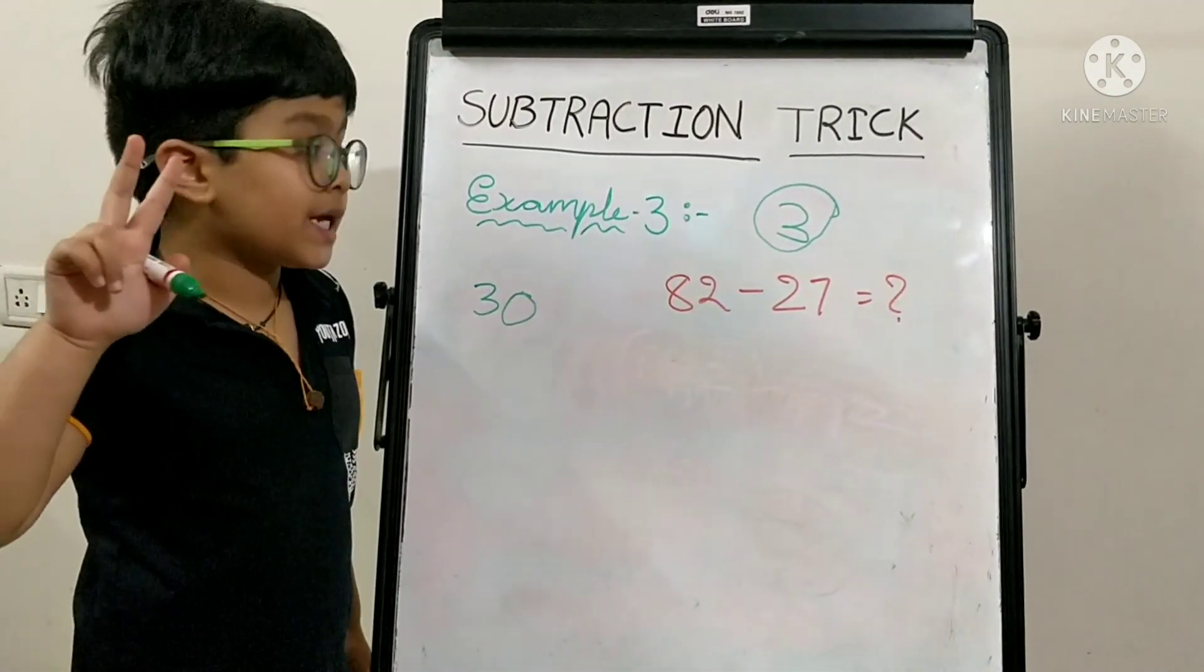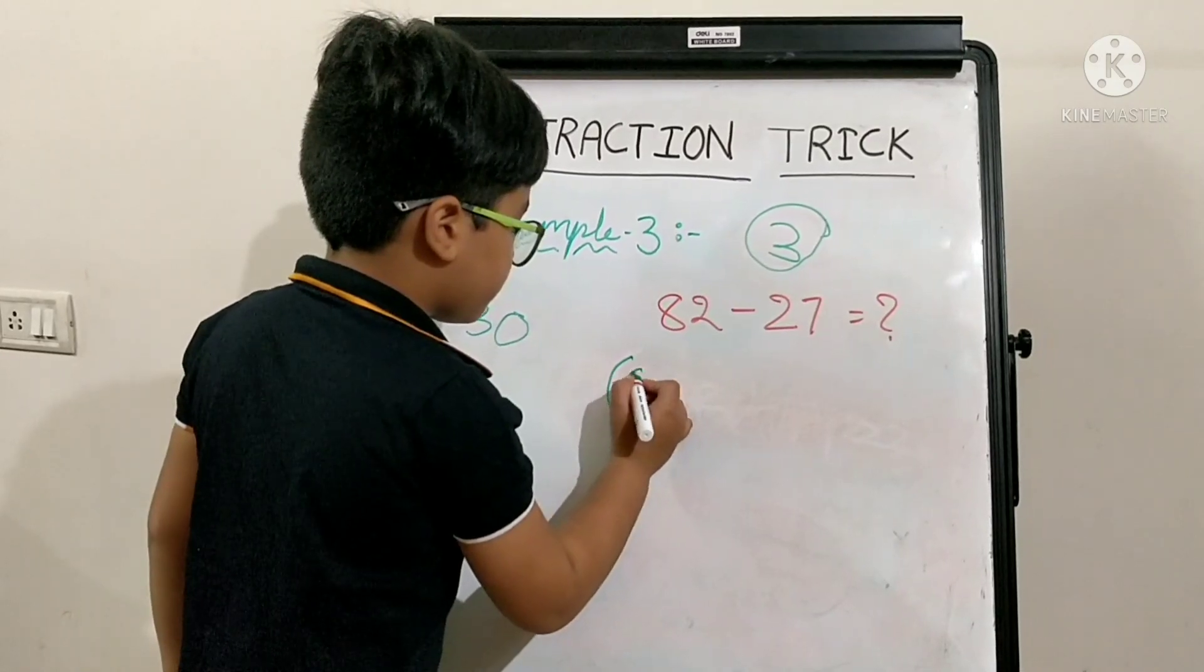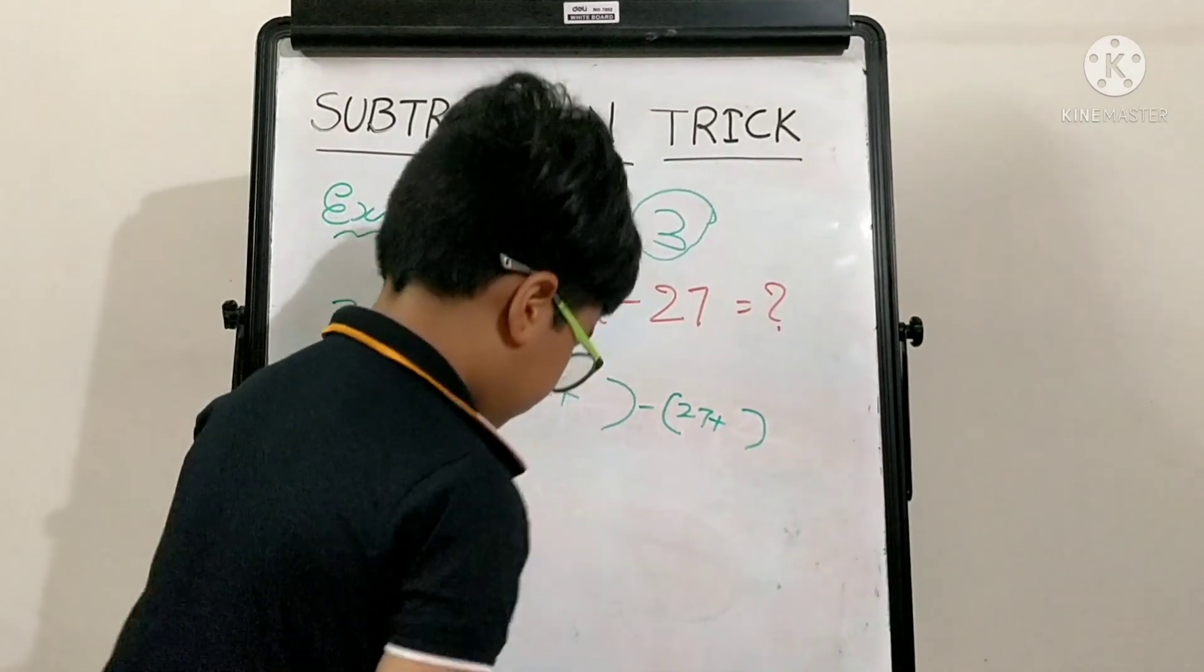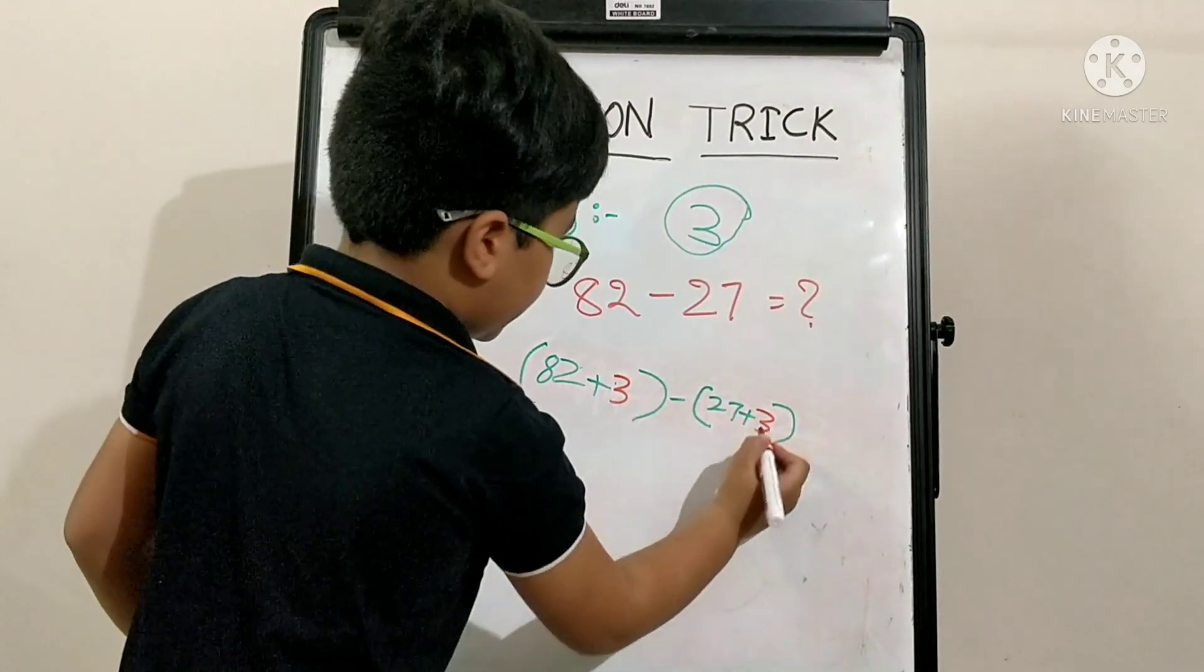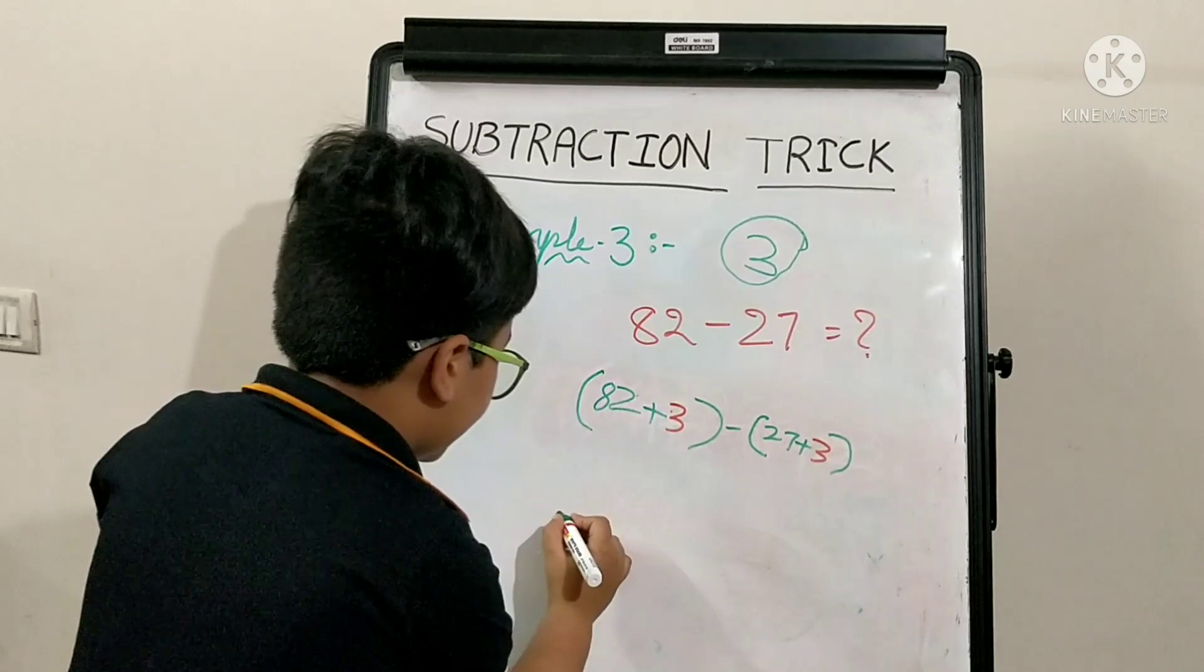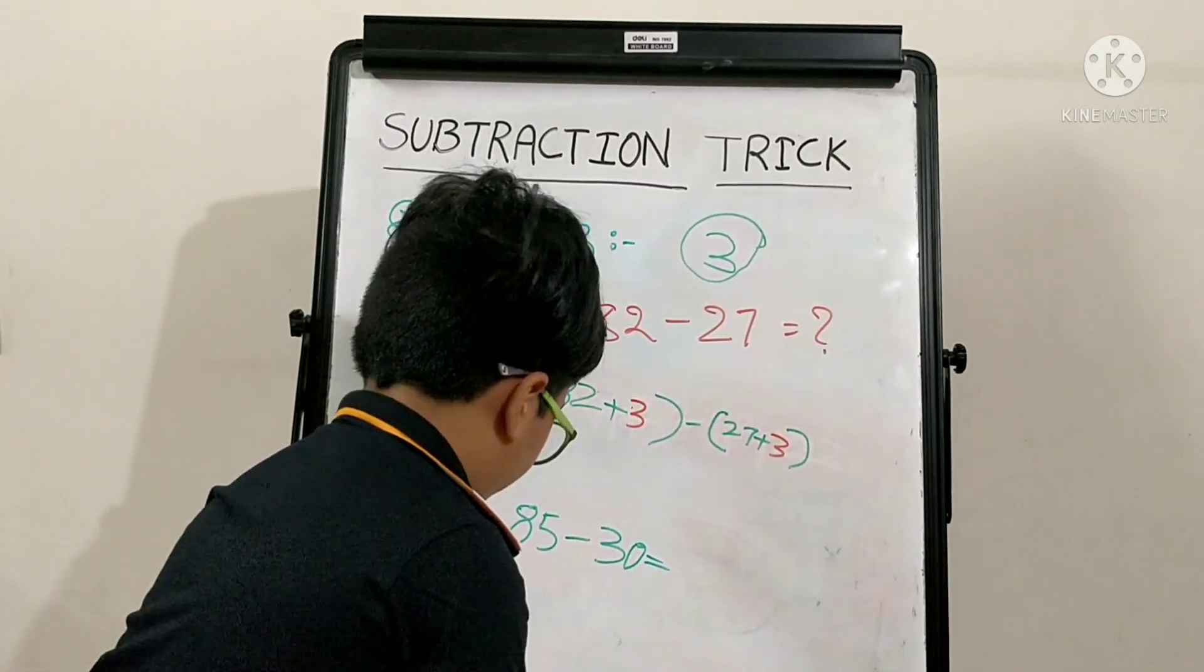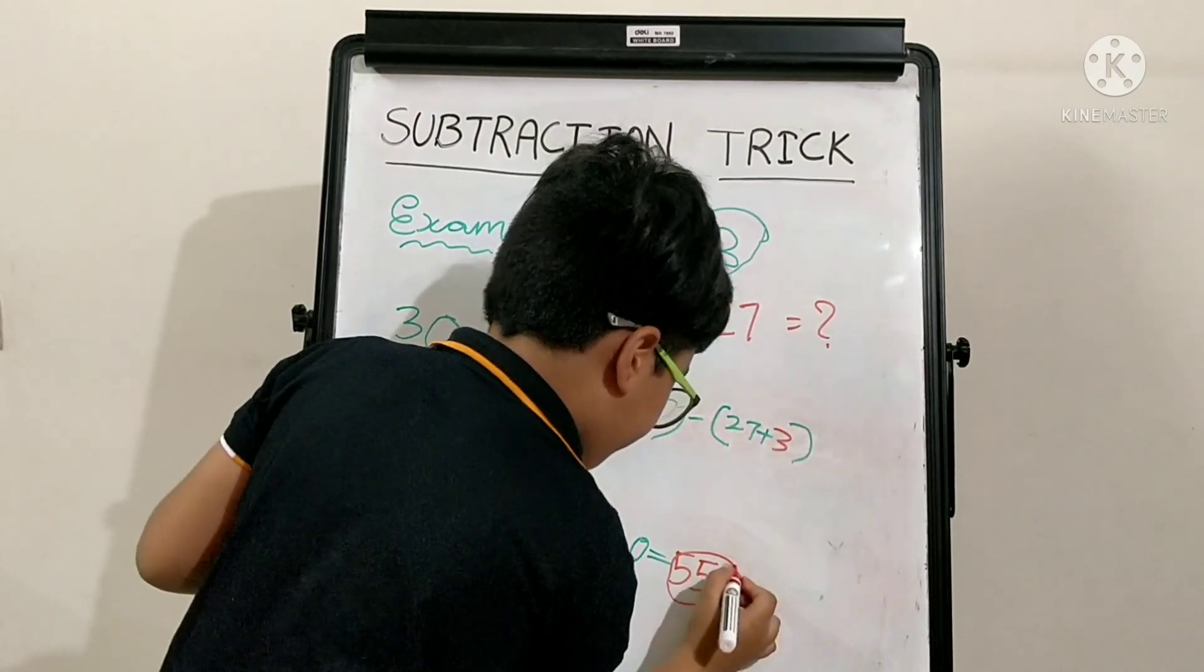The second step is, you have to add this number to both of these numbers. 82 plus 3, 27 plus 3. 82 plus 3 is 85. 27 plus 3 is 30. 85 minus 30 is equal to 55. The answer is 55.